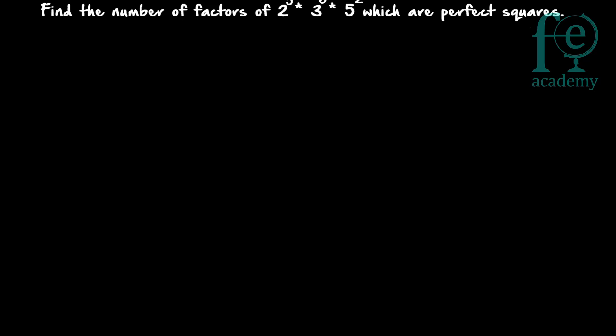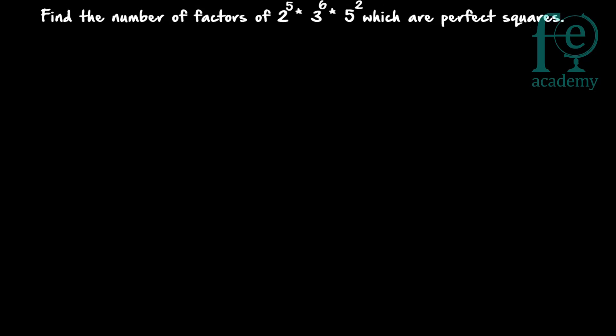Now, example number 2: find the number of factors of 2 raised to 5, into 3 raised to 6, into 5 squared, which are perfect squares. Here the number is directly given as a product of powers of prime factors. So n equals 2 raised to 5 into 3 raised to 6 into 5 squared. The powers are 5, 6, and 2 for primes 2, 3, and 5 respectively.